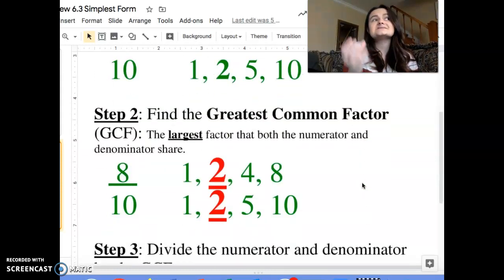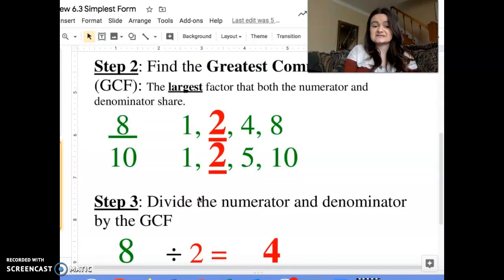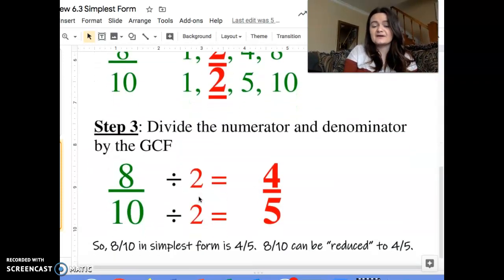My step two is I find the greatest common factor that they share. I look at eight's factors and ten's factors. I notice the greatest number that they share is two. So what I do next is I'm gonna take that number two and divide the numerator and the denominator by this number, which is the greatest common factor. So I have eight tenths. I divide the top and the bottom. Eight divided by two is four, ten divided by two is five, leaving me with four fifths.